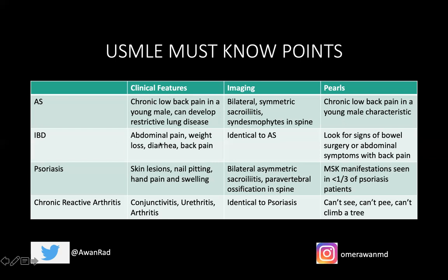For IBD, you'll have abdominal symptoms like abdominal pain, weight loss, diarrhea, and back pain. The imaging is identical to ankylosing spondylitis — look for signs of bowel surgery like surgical sutures from terminal ileum resection, and abdominal symptoms. For psoriasis, look for skin lesions and nail pitting; they may have back pain, hand pain, and swelling — clues to psoriatic arthritis. Sacroiliitis will be bilateral but asymmetric, involving patchy areas of the joint. Instead of syndesmophytes, they get perivertebral ossification in the spine, and peripheral arthritis is very distal — hands and feet, not shoulder and hip.